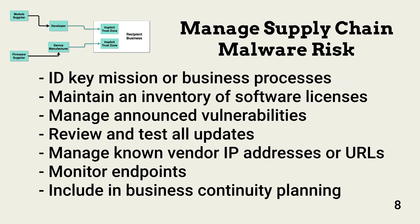Customer organizations must also know the correct IP addresses and URLs used by vendors for updates, as attackers sometimes redirect updates so they come from malicious servers. Organizations should assume a supply chain attack will be successful. All endpoints involved in updates must be monitored, and related business function interruptions should be included in business continuity planning.